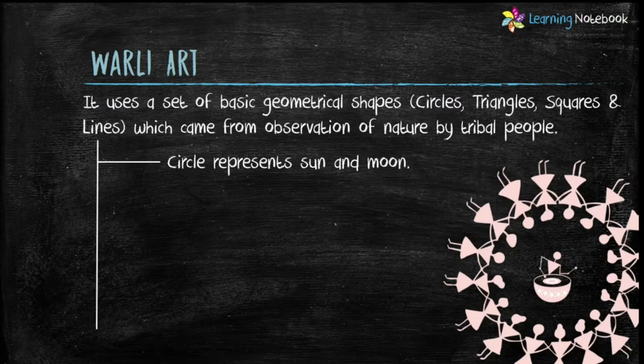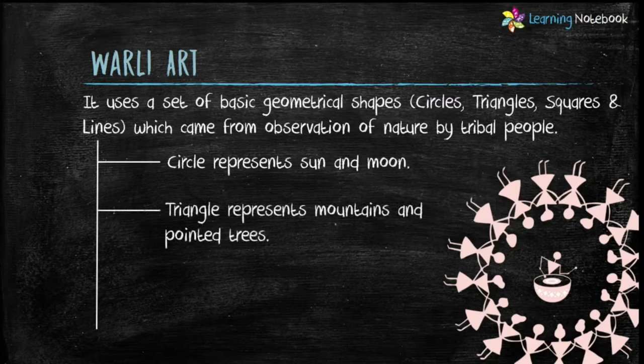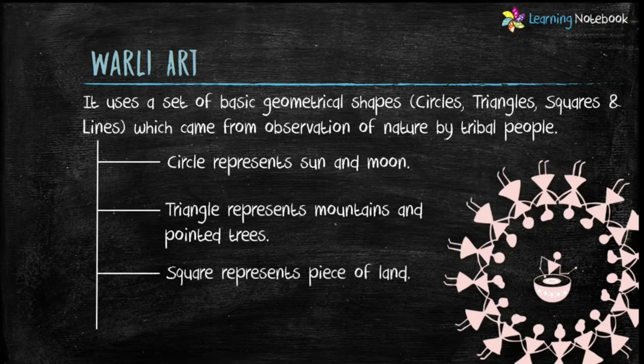Like circle in worldly art represents sun and moon, triangle represents mountains and pointed trees, and square represents piece of land.